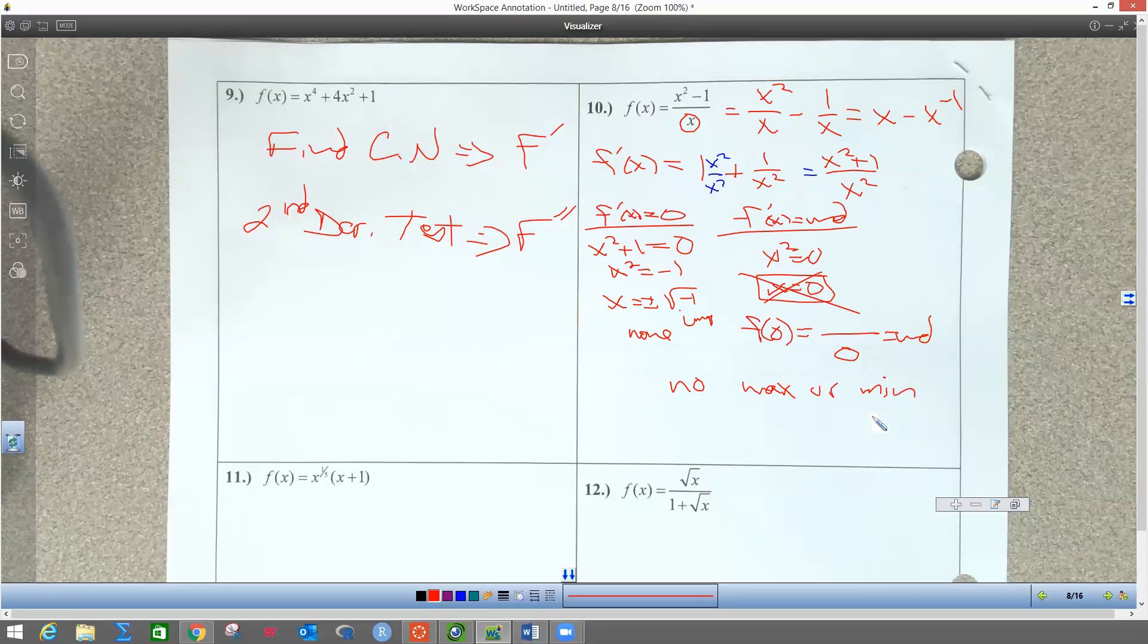Let me show you what that would look like on the calculator. I'm going to type that original problem in the calculator and graph it to show you there is no max or min. So we got x squared minus 1 on top and on the bottom we got x. Let me put the picture of the graph up for you real quick.